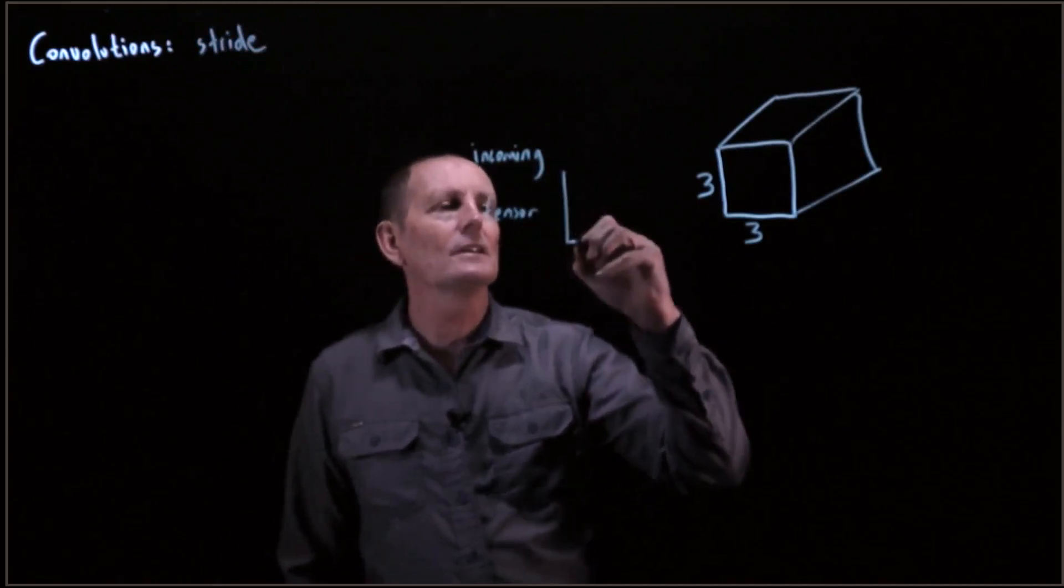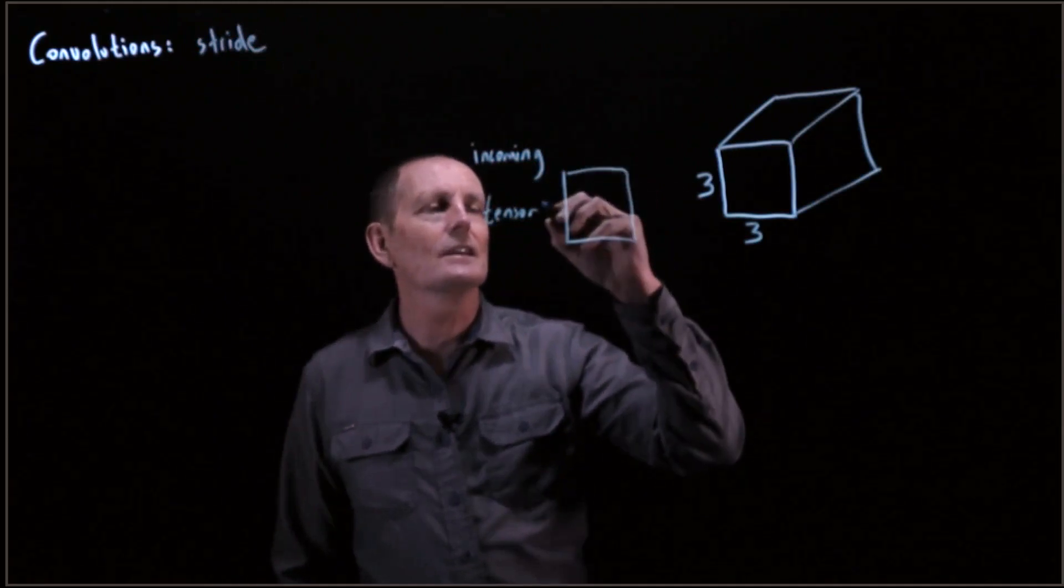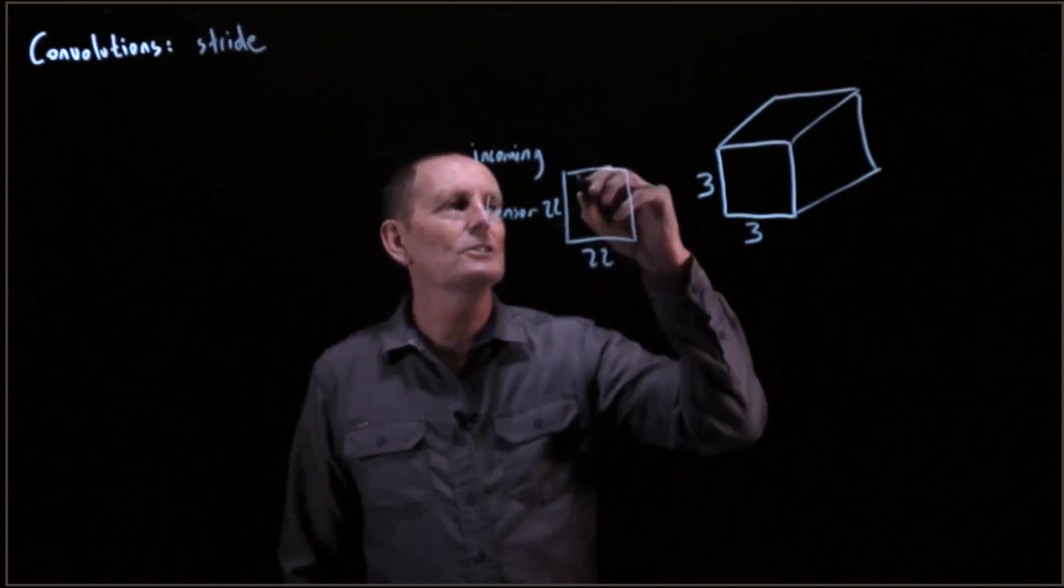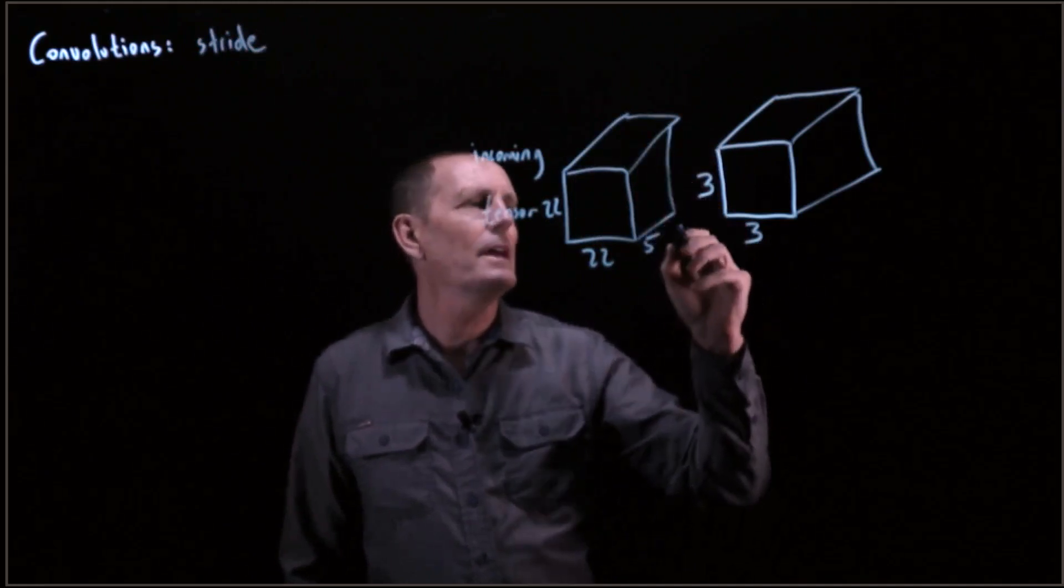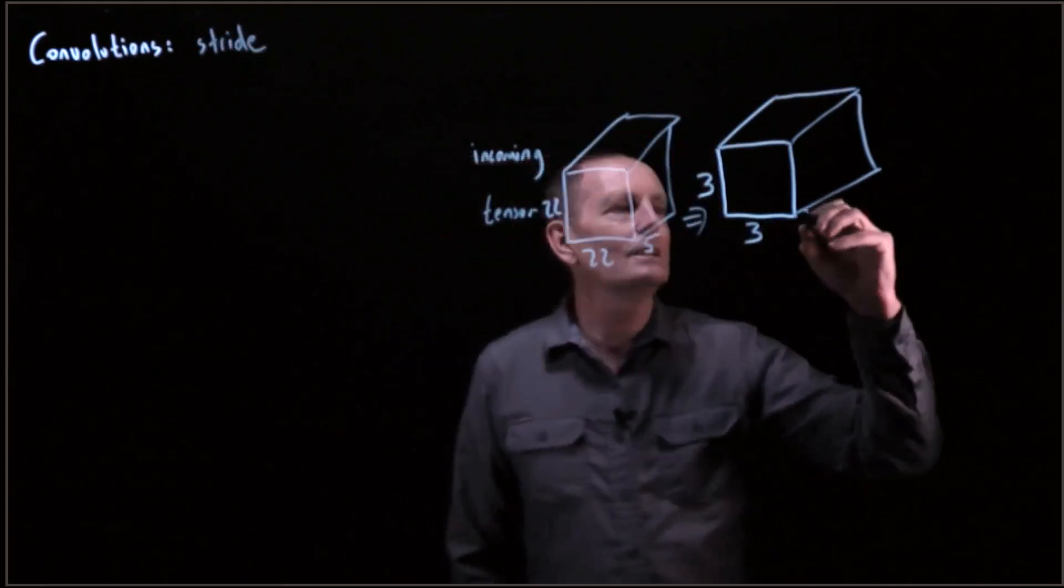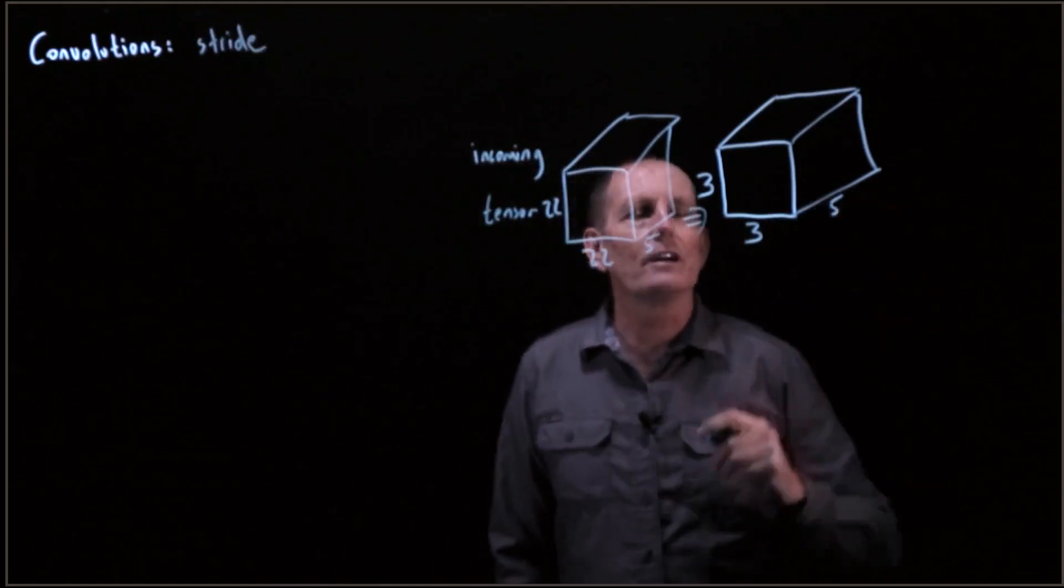If we have something that's of size, let's say 22 by 22 by 5, then that is going to need a 3 by 3 by 5 tensor.